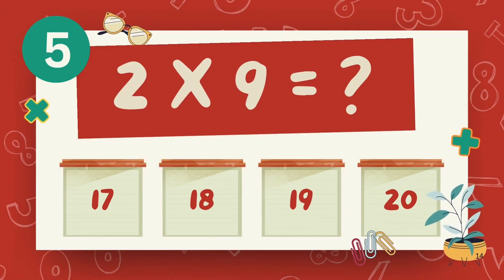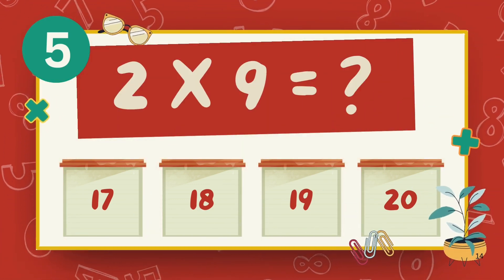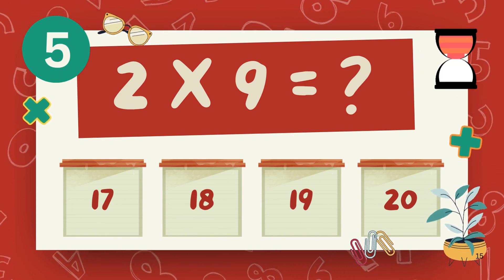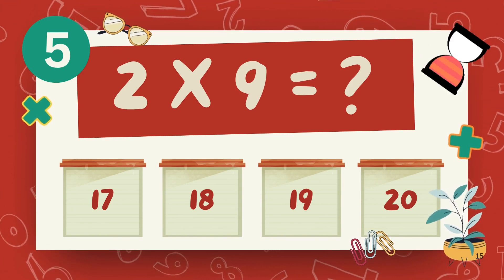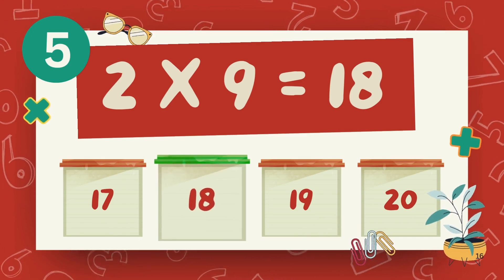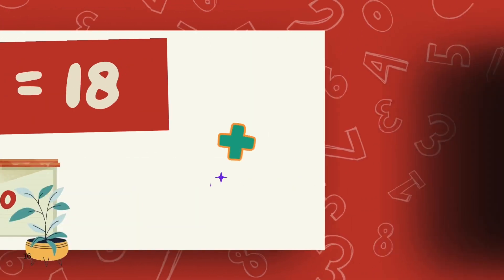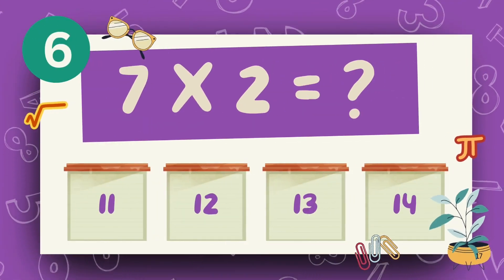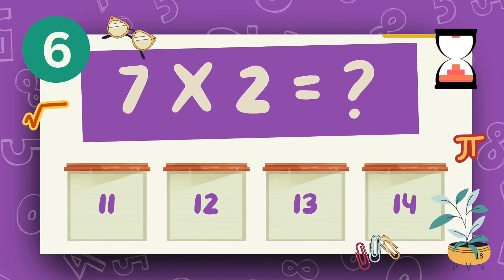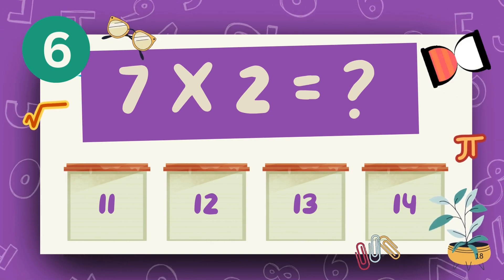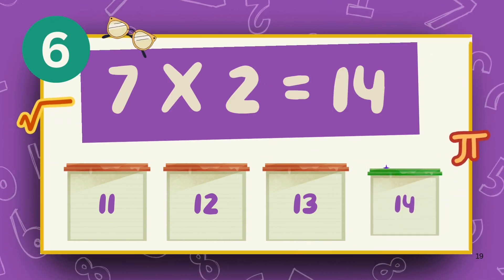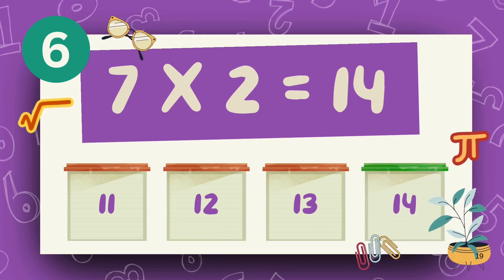What is 2 multiply 9? The answer is 18. What is 7 multiply 2? The answer is 14.